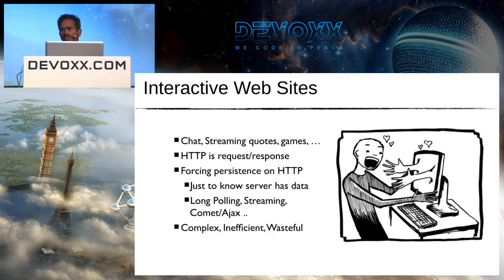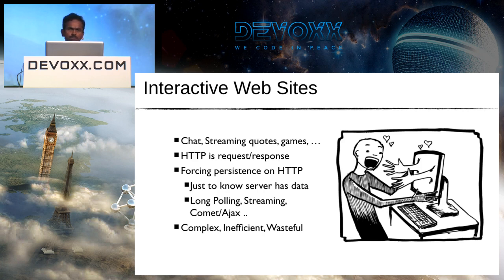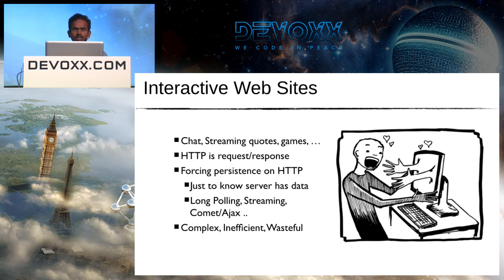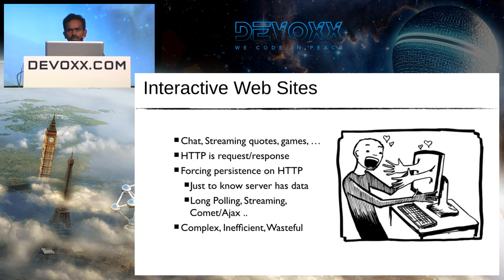Around the early 2000s, sites started to become more and more interactive, adding content or services that require two-way communication. But HTTP being a request-response protocol, it became difficult to achieve two-way communication. They had to simulate it on top of HTTP, and some techniques emerged primarily to overcome HTTP's limitations.